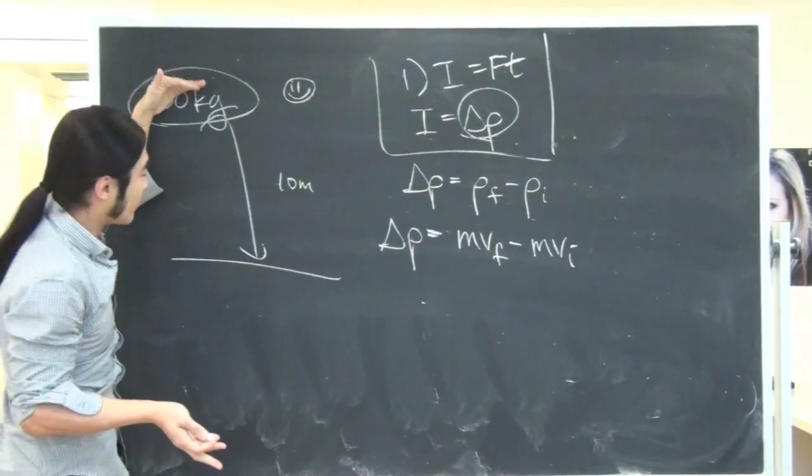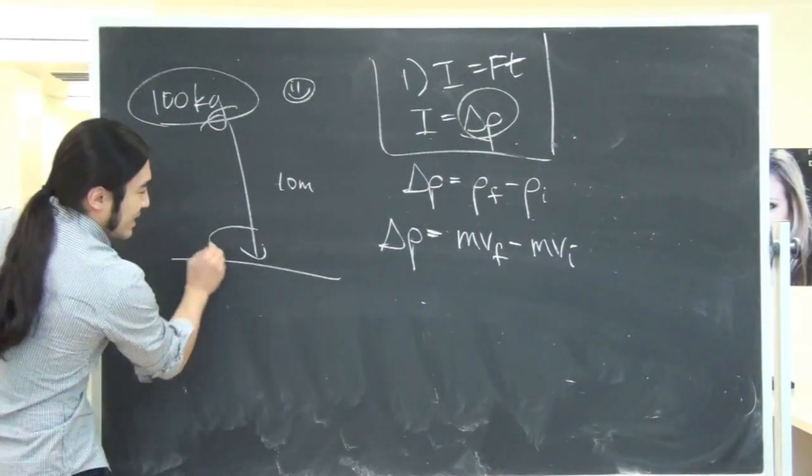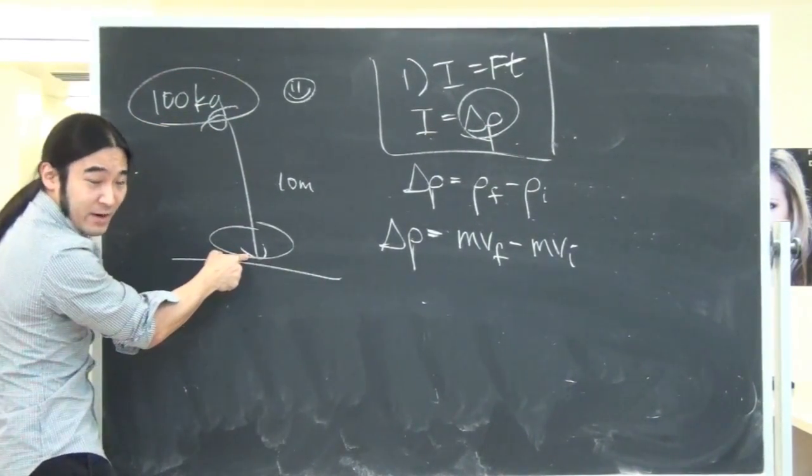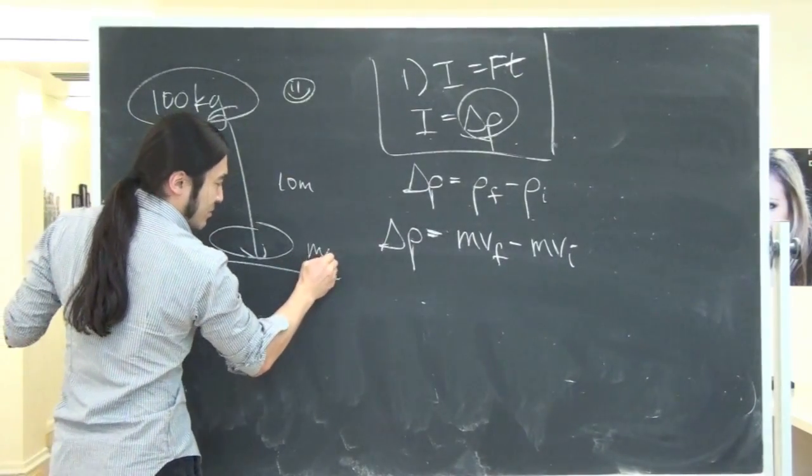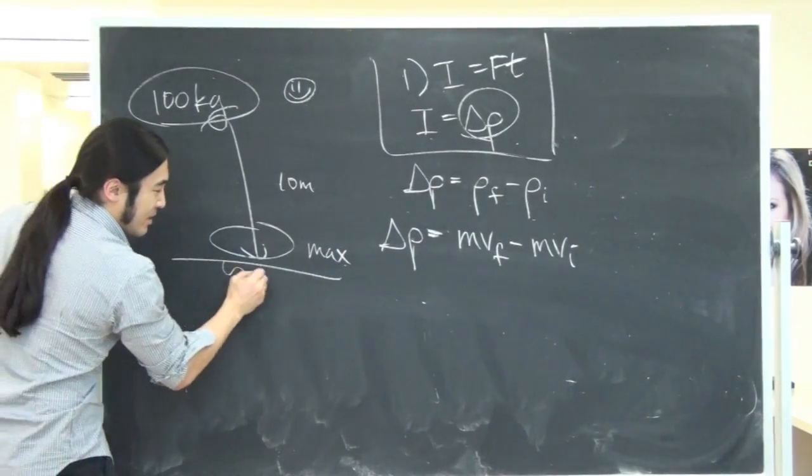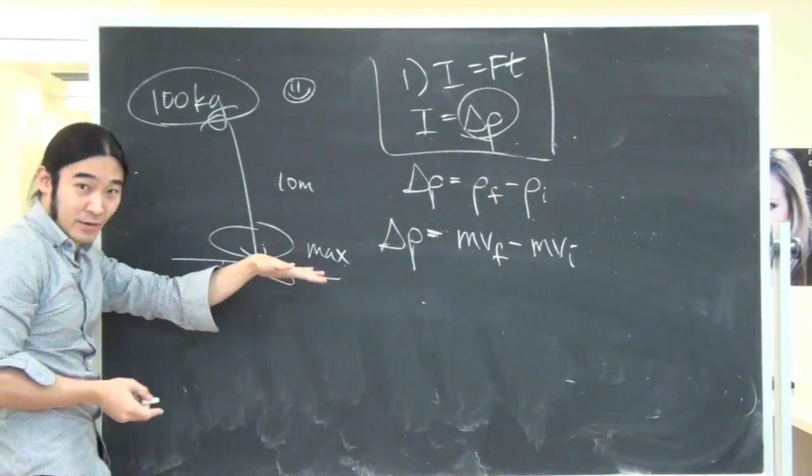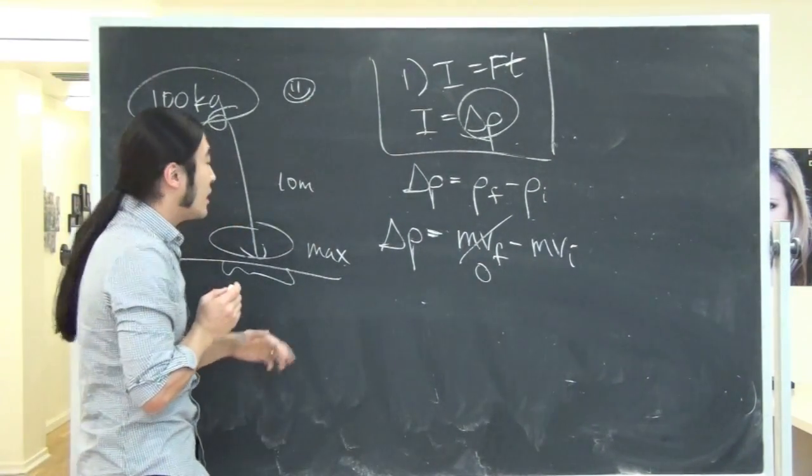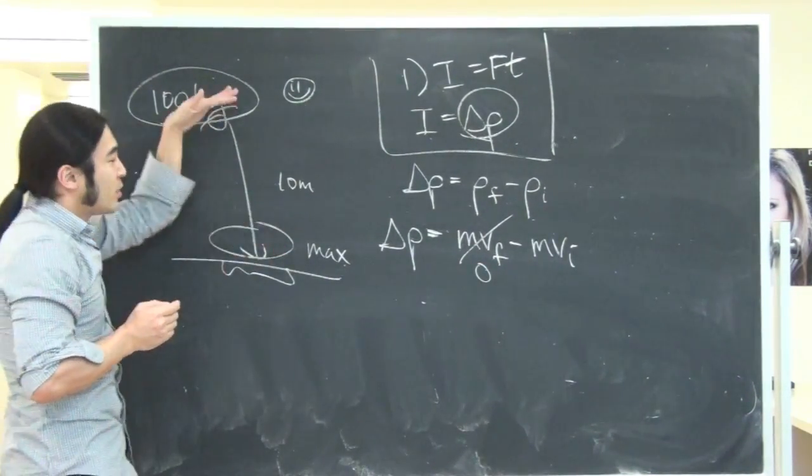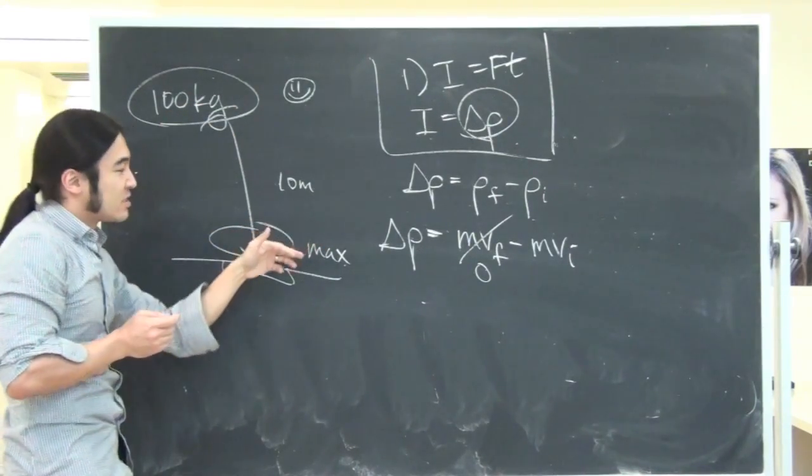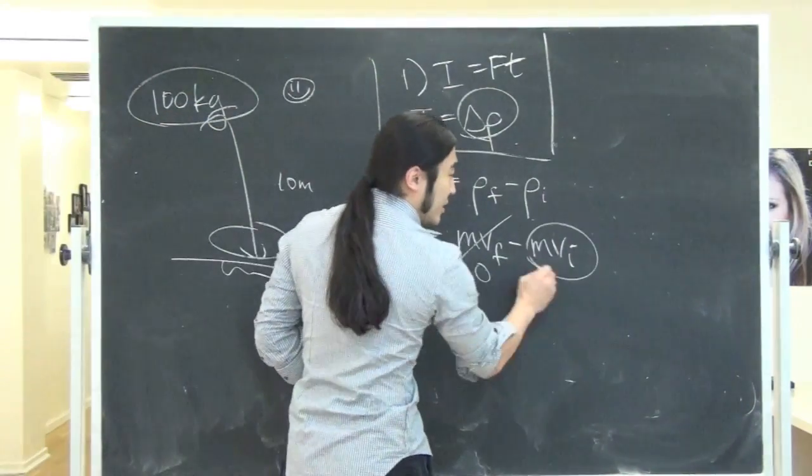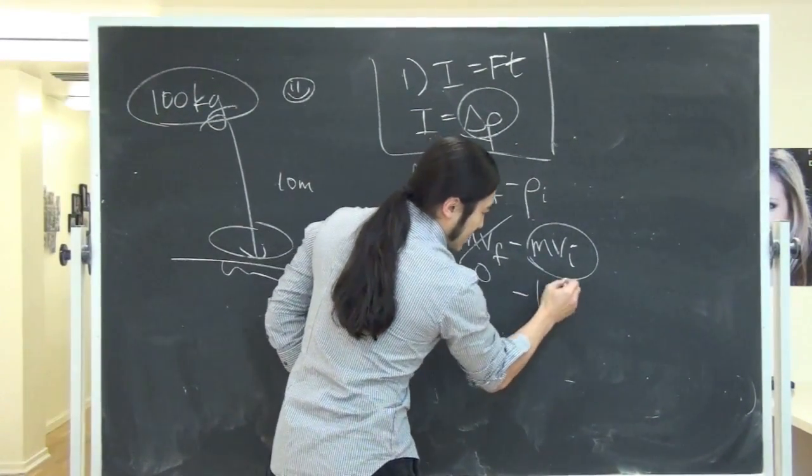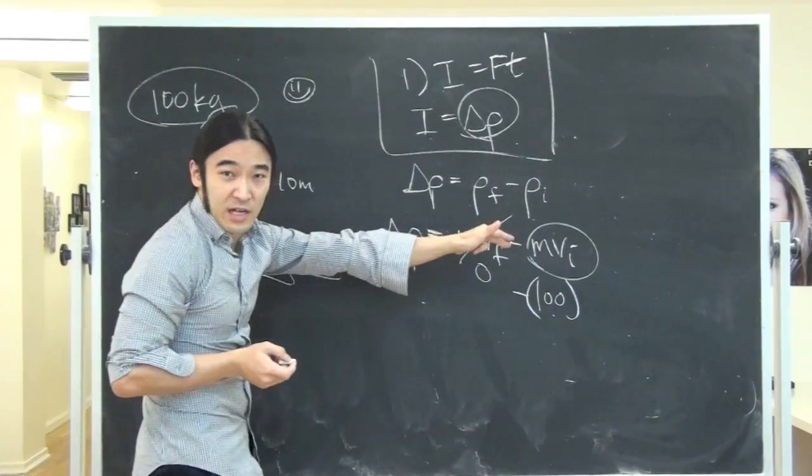When he starts, he's pretty much still. And as he's falling, he hits a maximum speed right before he hits the ground. So this is where his momentum is going to be maximum. Then the instant that he hits the ground, all of a sudden he stops. In this case, momentum final is going to be zero. What about momentum initial, right before he smacks the ground? I already know his mass. What I've got to get is velocity.